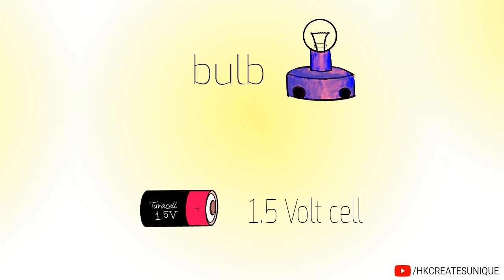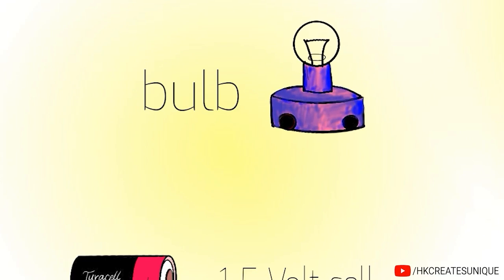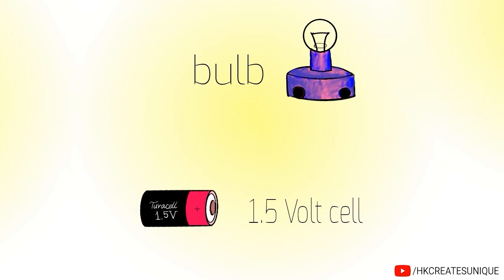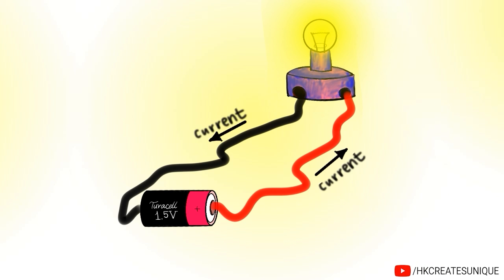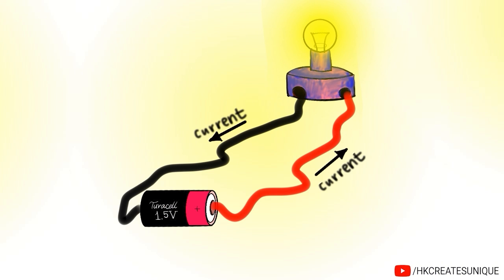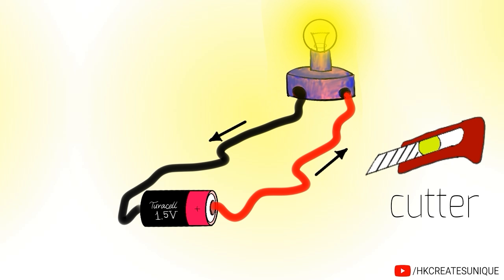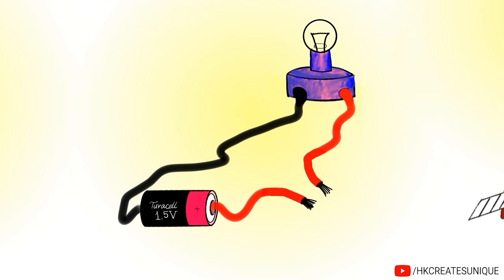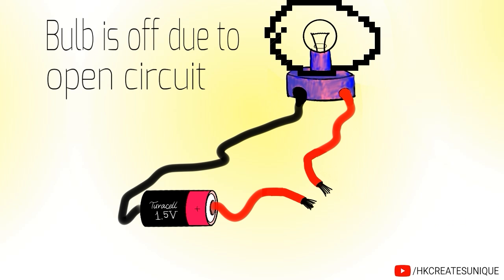Let's say we have a load such as a bulb and a voltage source. To turn the bulb on, connect the bulb with the voltage source using wires like this. This way, current flows and the bulb turns on. To turn the bulb off, you can just cut the wire using a cutter or scissor. The bulb is off due to open circuit.